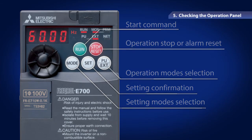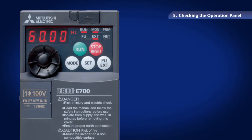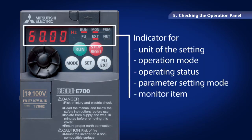In addition, you can check the unit of the setting, the operation mode, the operating status, the parameter setting modes, or the monitor item on the display of the operation panel.